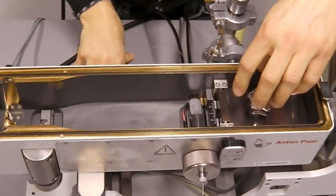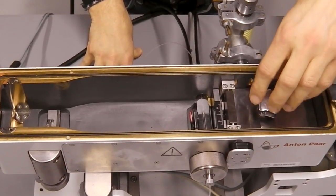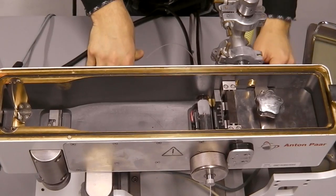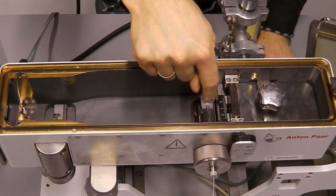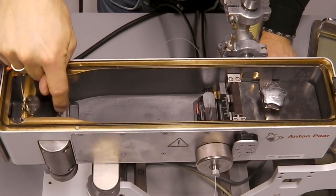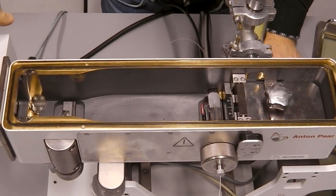There is a collimation block which cuts off the X-ray beam to the shape that we want, a sample position with a temperature cell, and a beam stop with a detector at the very end.